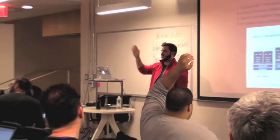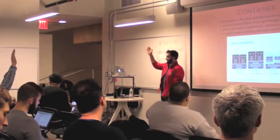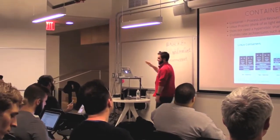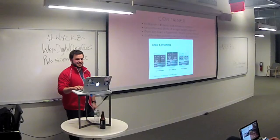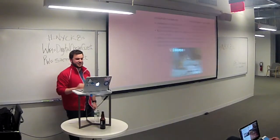Awesome, so I can almost skip this slide. Process isolation — it's kind of like a lightweight VM to the eyeball but really shares a kernel underneath. It enables new architectures. I won't spend too much time on that because I saw all the hands, which is great.